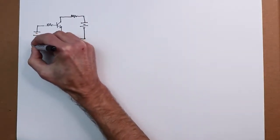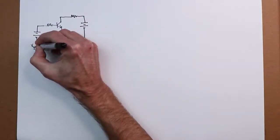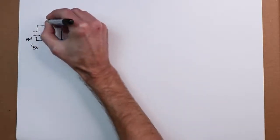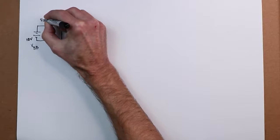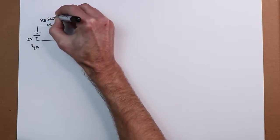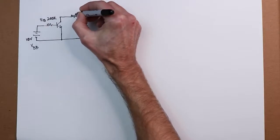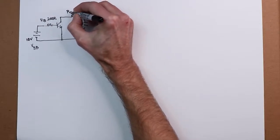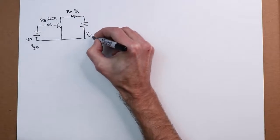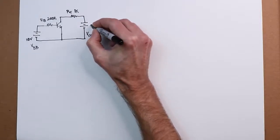So here's VBB. Let's make this 10 volts. Here's the base resistor RB, and we'll make this 200k ohms. The collector resistor will make that 1k, and the collector power supply will make 15 volts.